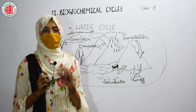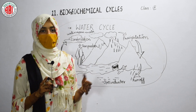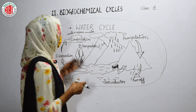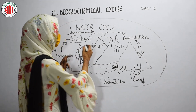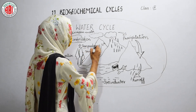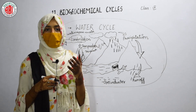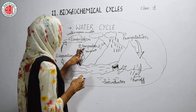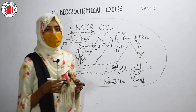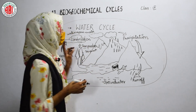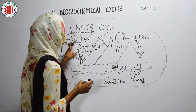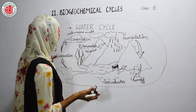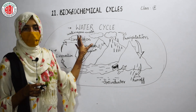Evaporation is not the only process that changes water into water vapor. Other processes also contribute to releasing water vapor into the atmosphere — those are transpiration and perspiration. Animals, when they exhale air, release water vapor along with gases, and that water vapor enters the atmosphere. Transpiration is a process carried out by plants, in which they lose water in the form of water vapor to the atmosphere. So water reaches the atmosphere through evaporation, transpiration, and perspiration.